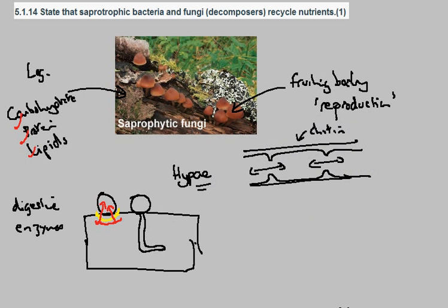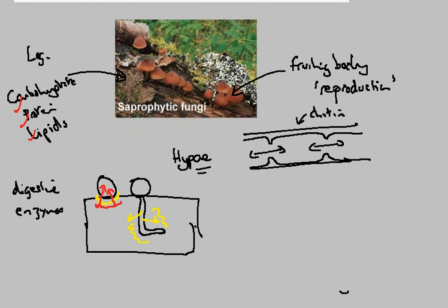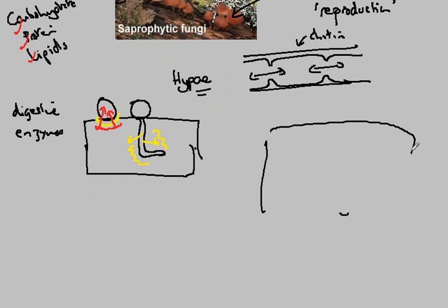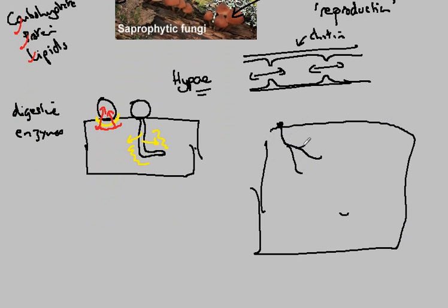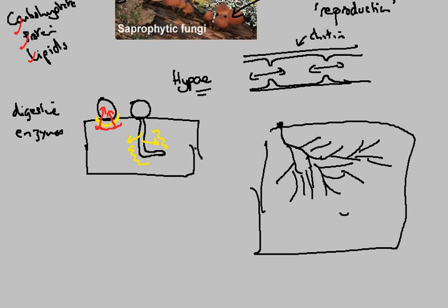All the time it's secreting these digestive enzymes and digesting the wood away. Over a period of time, the spore — our fungi — will have grown down into the wood, and the hyphae will branch and develop a highly branched network of hyphae, and this is called a mycelium.